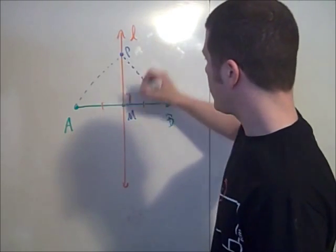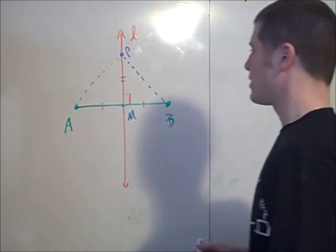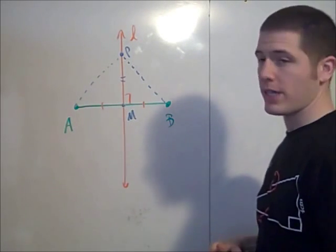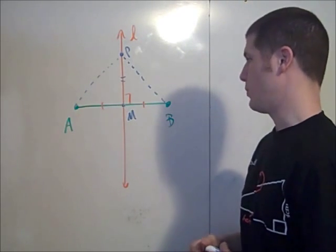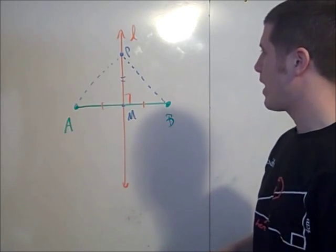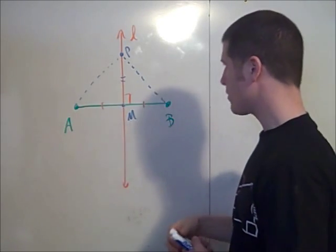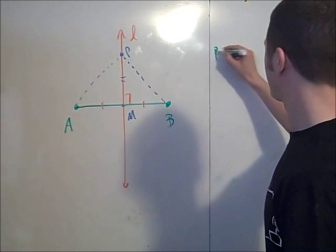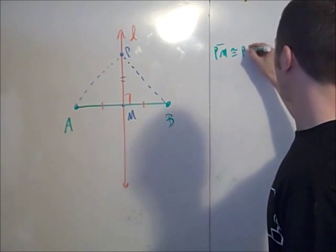We know that PM is congruent to itself by the reflexive property of congruence, and so we have that triangle, so we know PM congruent to PM.